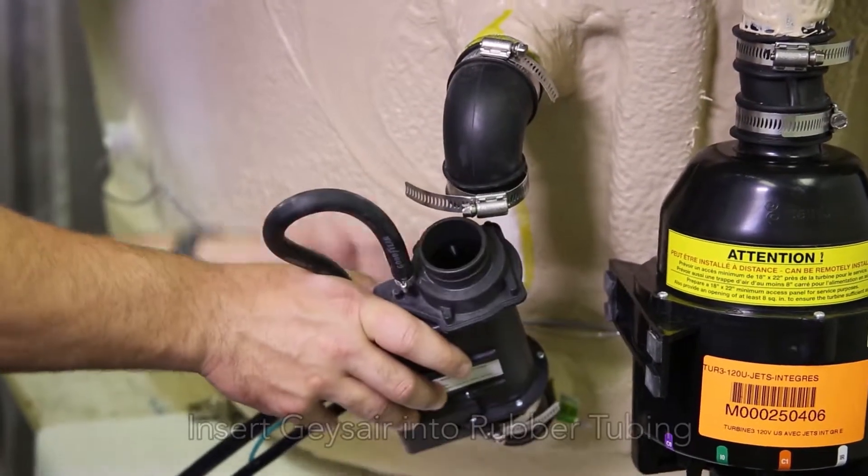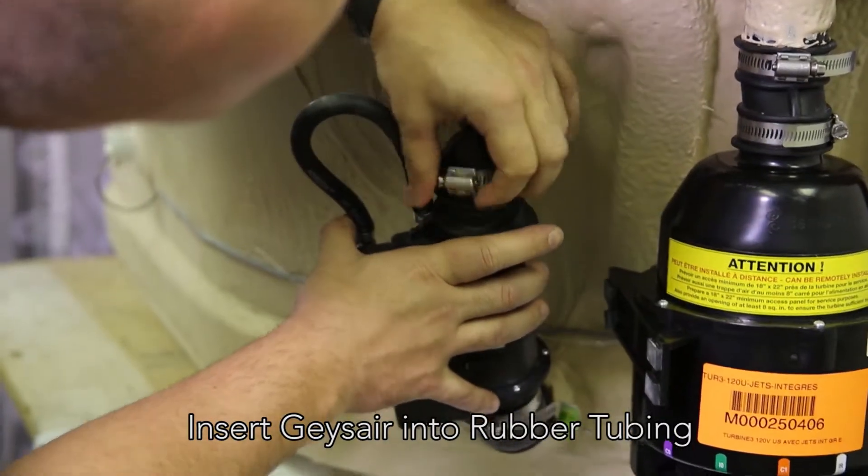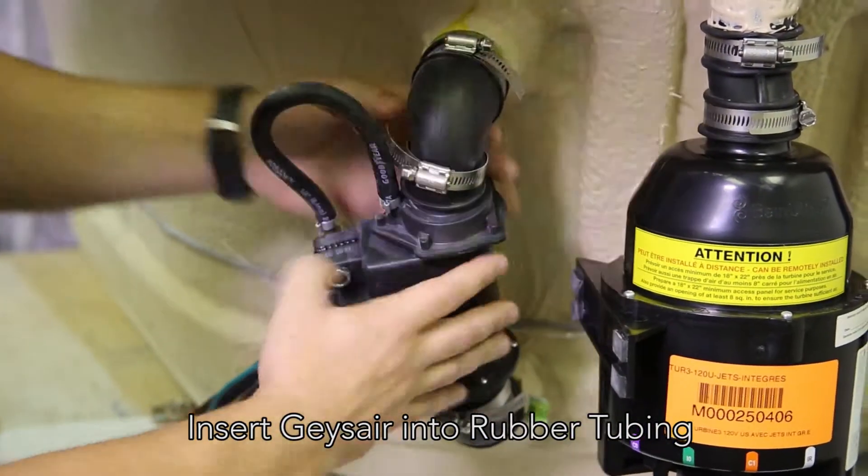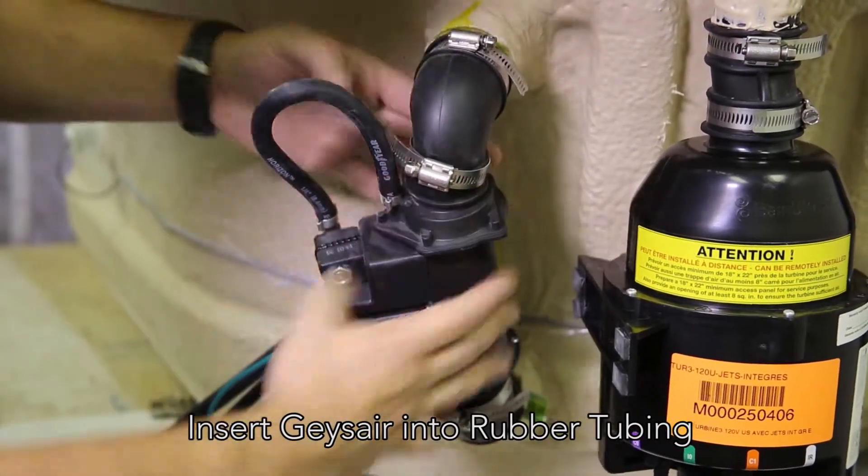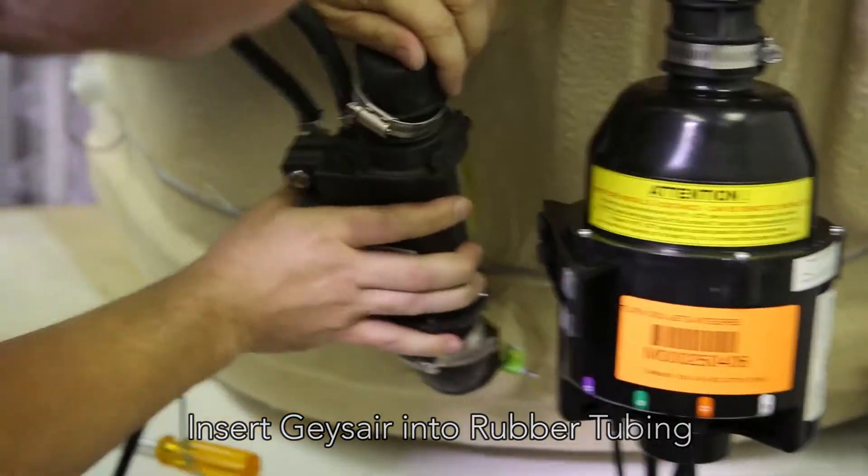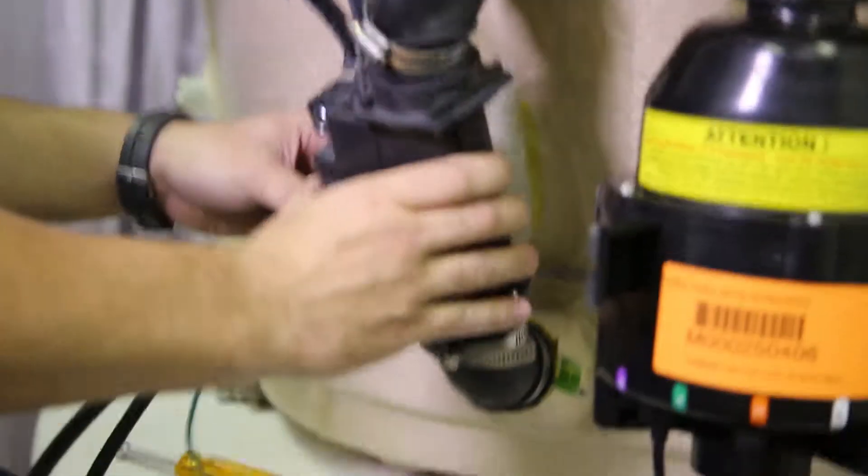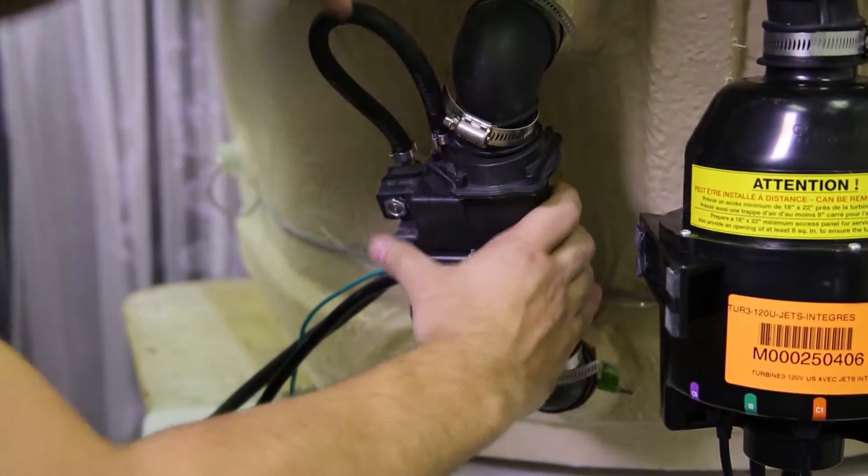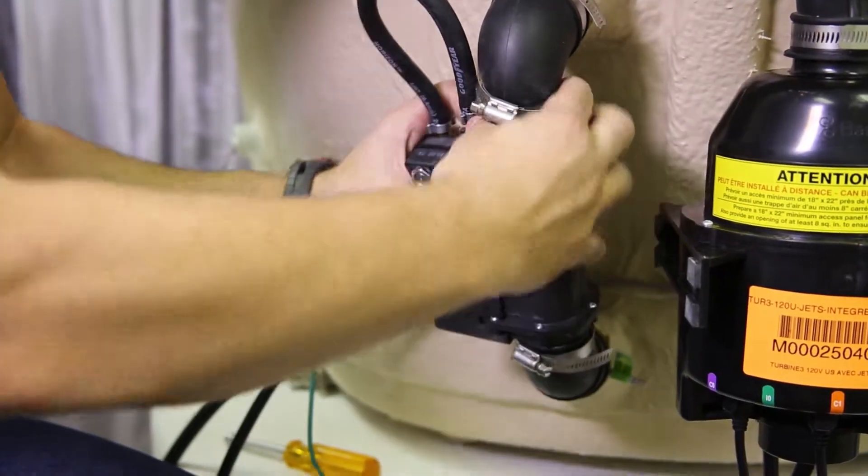Push it down like so, and then you can scoot the metal clamp away. Make sure that it's all the way down like that. We'll turn it a little bit more like it was. There we go.